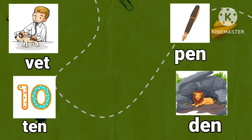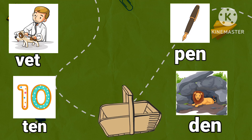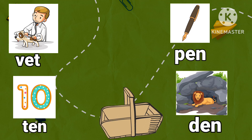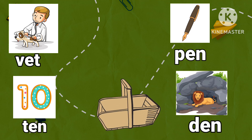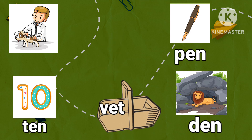Next. Wet, ten, pen, den. Wet, den, pen, den. Pick out the word that does not rhyme in this group. Pick up the word wet and drop it in the basket.